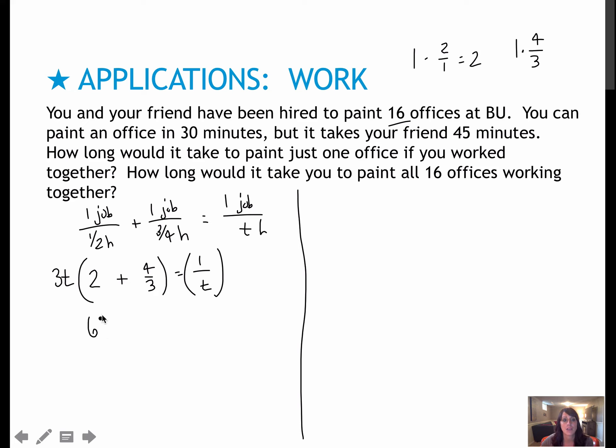Multiplying by 3T gives me 6T here. The threes cancel on this fraction, giving me 4T. And one over T times 3T gives me 3. Adding 6T plus 4T is 10T. So the time it would take is three-tenths of an hour. To turn it into minutes, I take 3/10 times 60, which is 18 minutes.